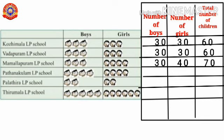Next, in Pattanagulam LP school, 40 boys and 40 girls are there. So the total number of children in Pattanagulam LP school is 40 plus 40 equals 80. Next, in Palatira LP school, 20 boys and 20 girls are there. So the total number of children in Palatira LP school is 20 plus 20 equals 40.